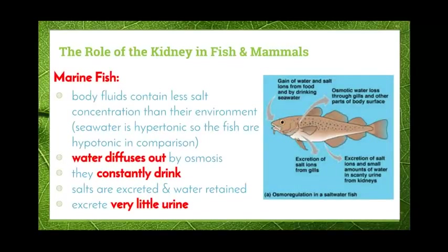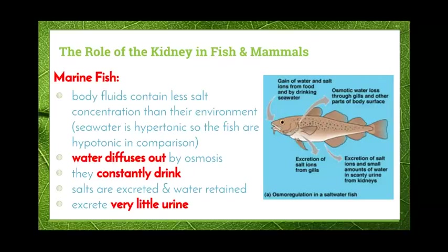Now we're going to look at the role of the kidney in both fish and mammals, starting with marine fish — our saltwater fish living in the ocean. The body fluids of marine fish contain less salt concentration than their environment, so the seawater is hypertonic and the fish is hypotonic in comparison. As a result, a lot of water diffuses out of the fish via osmosis across the gills and other body surfaces. The fish are constantly drinking to replace water lost, but because they're drinking seawater, they're also taking in a lot of salt.